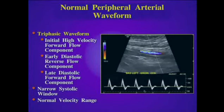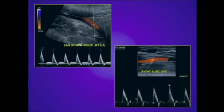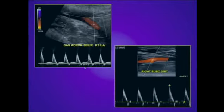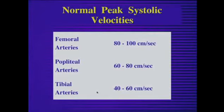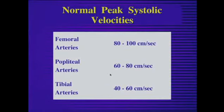In the evaluation of peripheral arterial waveforms, we will look at the triphasic shape, the systolic window — as red blood cells should be moving at approximately the same velocity at any given point — and the velocity range. No matter where we sample from the upper or lower extremities, we should see a normal triphasic waveform. The normal peak systolic velocity range is typically 80 to 100 centimeters per second in the femoral arteries, approximately 60 to 80 in the popliteal artery, and 40 to 60 centimeters per second in the tibial arteries.